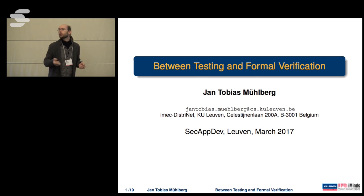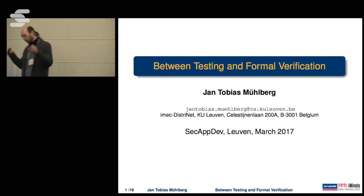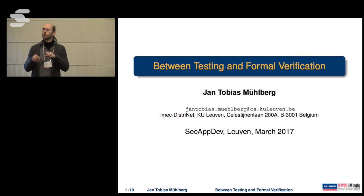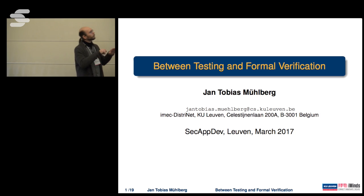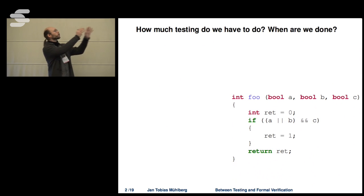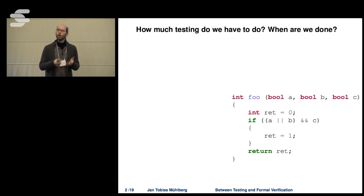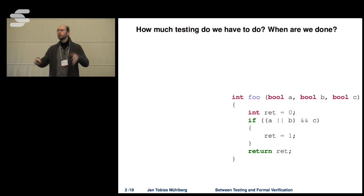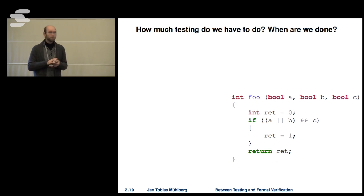This talk went through several iterations during the last couple of days. I'm very happy to make this quite interactive. Here is a first question for you: you have a very simple piece of C code — how much testing do we have to do? When have we tested this piece of code enough? Maybe you can give me some ideas how you would approach testing this one function.